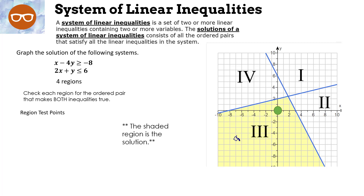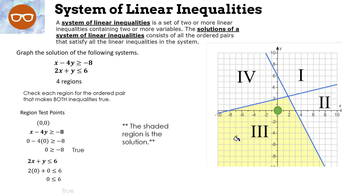Check the first inequality: x − 4y ≥ −8. Put 0 in for x and 0 for y: is 0 ≥ −8? Yes. Now check the second inequality: 2x + y ≤ 6. Put 0 in for x and 0 for y: is 0 ≤ 6? Also true. Both inequalities are satisfied, so region 3 is our solution.